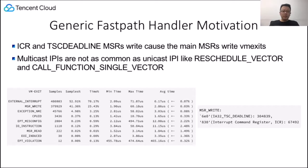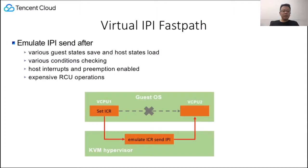We introduce a fast path handler to handle certain performance-critical MSRs in a very early stage of the KVM VM exit handler. After a VM exit, there are various guest state saves and host state loads, various condition checking, host interrupts and preemption enabled, and also expensive RCU operations. We can even be interrupted or preempted after host interrupts and preemption are enabled.